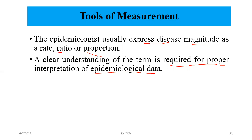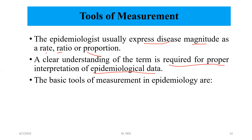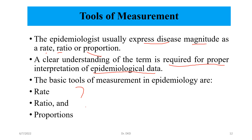If we have epidemiological data, we need proper interpretation. The basic tools of measurement in epidemiology are rate, ratio, and proportion. These three measurements are important to describe disease frequencies.